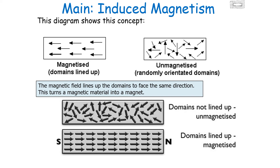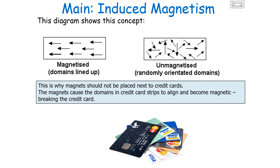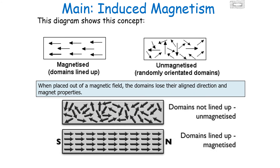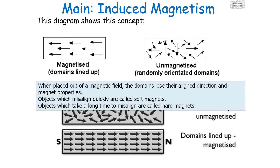That's actually why magnets shouldn't be placed next to credit cards — the magnets cause the domains in the credit card strips to align and become magnetic, which can break the card. When placed outside of the magnetic field, or without the electrical current running through it, the domains lose their aligned direction and move in all random orientations, so the magnet loses its magnetism. Objects which misalign their domains really quickly are called soft magnets, whilst objects which take a long time to misalign their domains are called hard magnets.